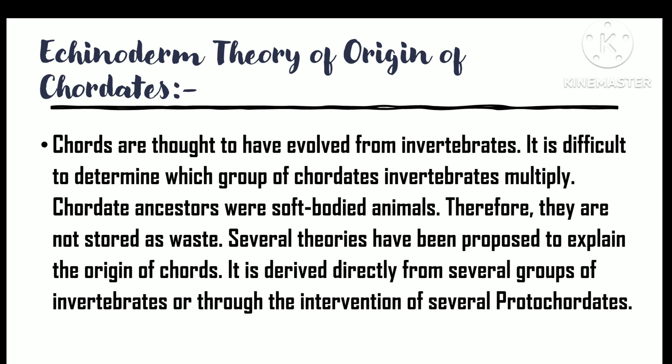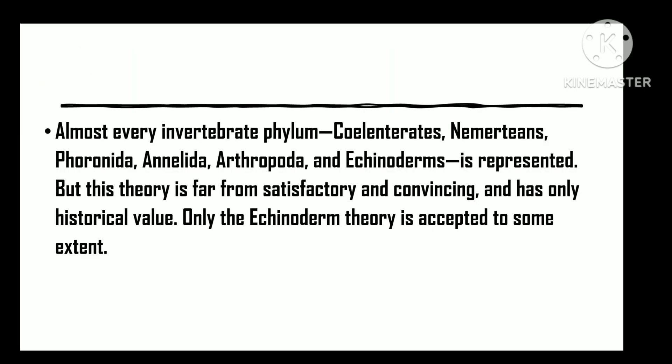Several theories have been put forward to explain the origin of chordates — either directly from some invertebrate group or through the intervention of some proto-chordates. Almost every invertebrate group including coelenterates, nematodes, phoronida, annelida, arthropods, and echinoderms has been suggested. But these theories are far from satisfactory and have only historical value. Only the Echinoderm theory has received some acceptance.